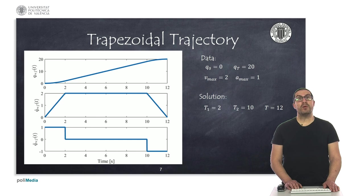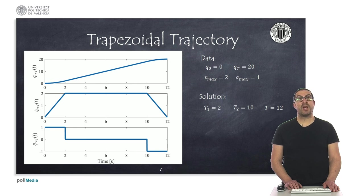Here we can see a numerical example of a trapezoidal trajectory with q0 equals zero degrees, qt equals twenty degrees, maximum velocity of two degrees per second, and maximum acceleration of one degree per second squared. Under these conditions, the time instants to generate a trapezoidal trajectory are t1 equals two, t2 equals ten, and t equals twelve seconds.